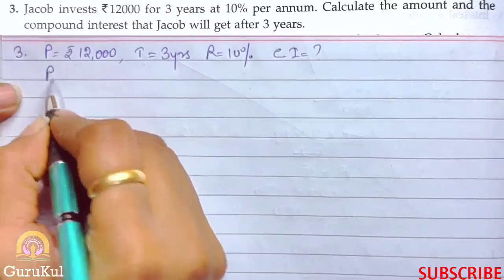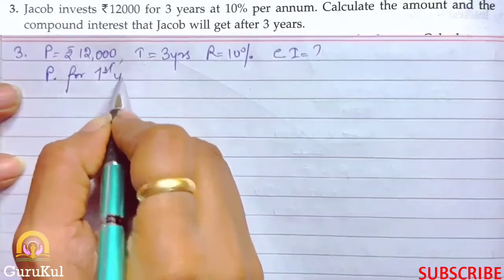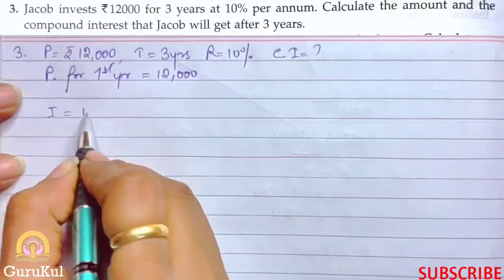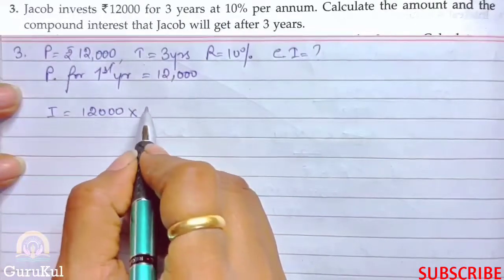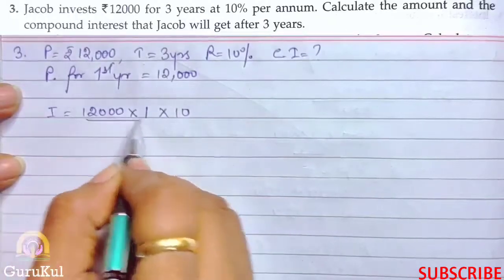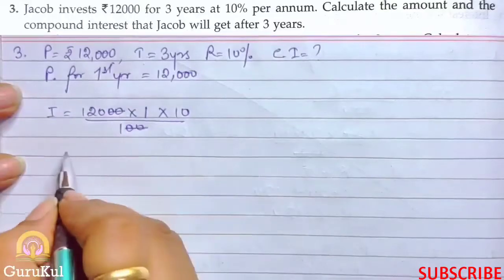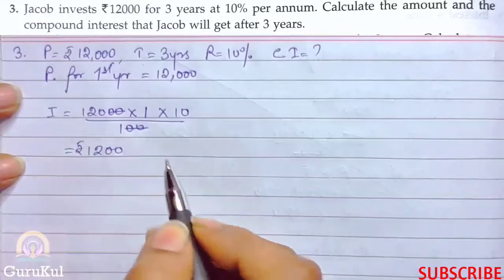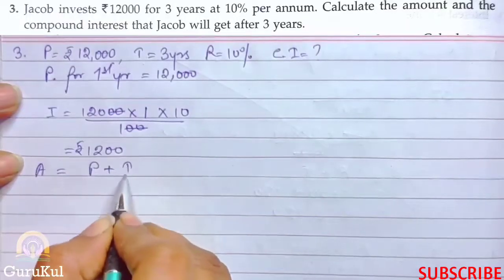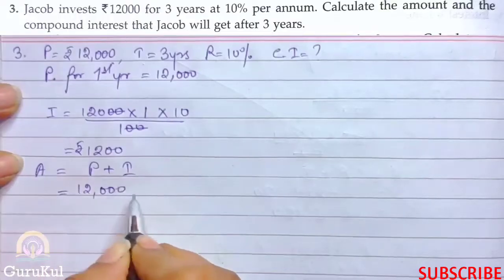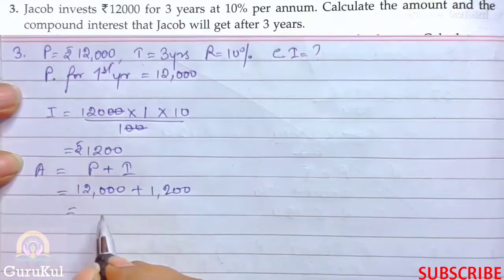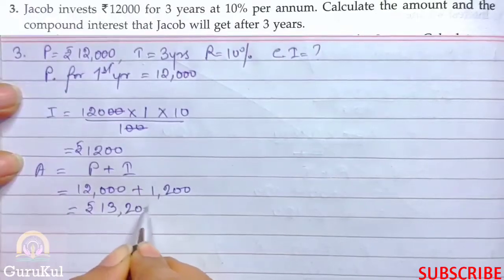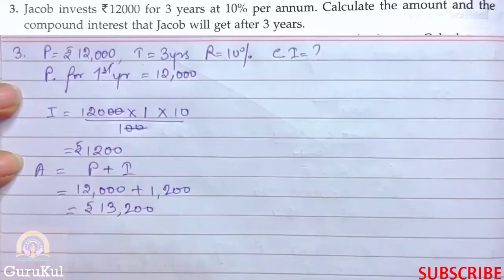Principle for first year is ₹12,000. Interest equals 12,000 into time 1 year into 10 by 100. This cancelled, so our interest is ₹1200. Now amount is principle plus interest, that is 12,000 plus 1200, that gives us the amount of ₹13,200. This is first year.